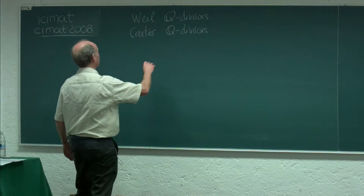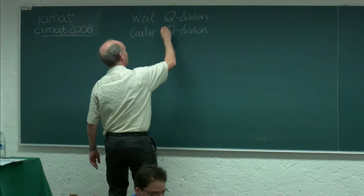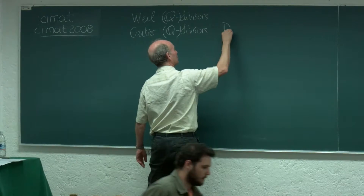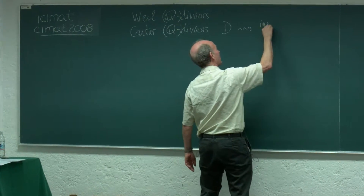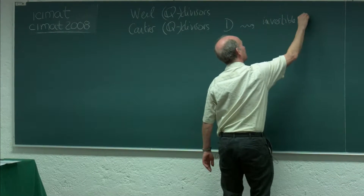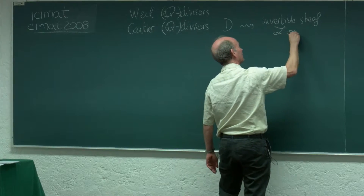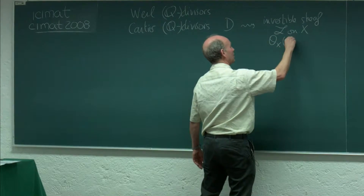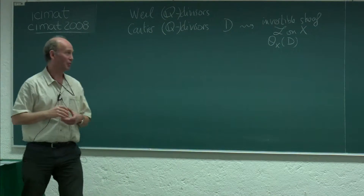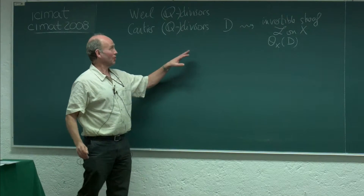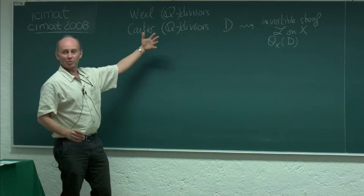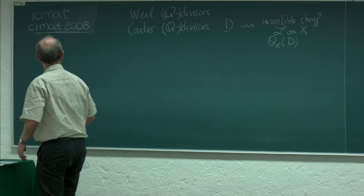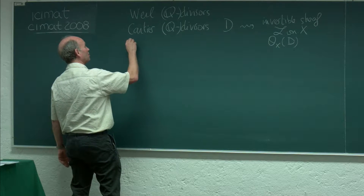Let's forget about the Q here, because if you have a true integral Cartier divisor D, you can associate to it an invertible sheaf L on X, which is usually written as O_X(D). Most of the time I'll use the language of divisors more than invertible sheaves. One reason is that it's easy to go from a divisor to a Q-divisor, and on the sheaf side there's no such analog. Finally, I defined linear equivalence and numerical equivalence.